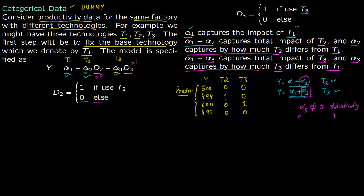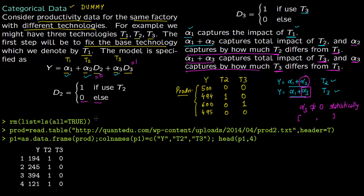Let's now run this on data in R. First, use rm(list=ls(all=TRUE)) to clear the session history. Then read the table from the website address, renaming it as 'prod'. Make it a data frame called P1 with column names Y, T2, and T3.